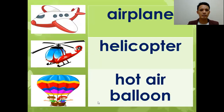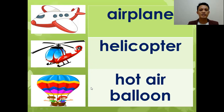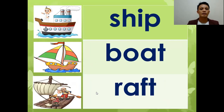Now the air transportation category. We have an airplane. When I want to go home to the Philippines, I ride an airplane. An airplane is an air transportation. Next: helicopter. A helicopter is an air transportation. We also have a hot air balloon. It is an air transportation.